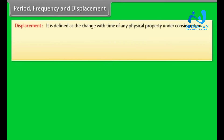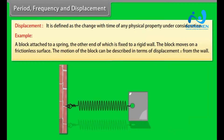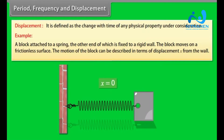Displacement is defined as the change with time of any physical property under consideration. For example, consider a block attached to a spring, the other end of which is fixed to a rigid wall. The block moves on a frictionless surface. The motion of the block can be described in terms of displacement X from the wall.